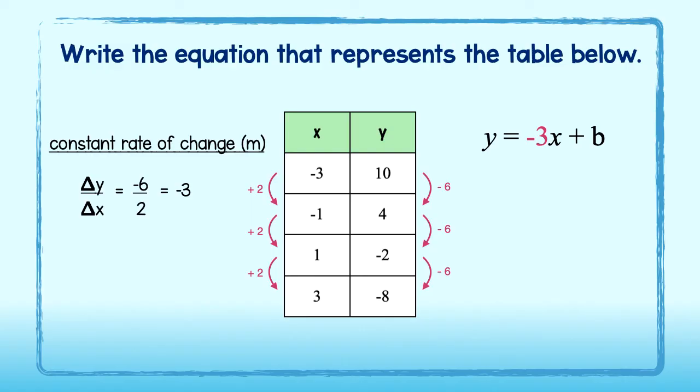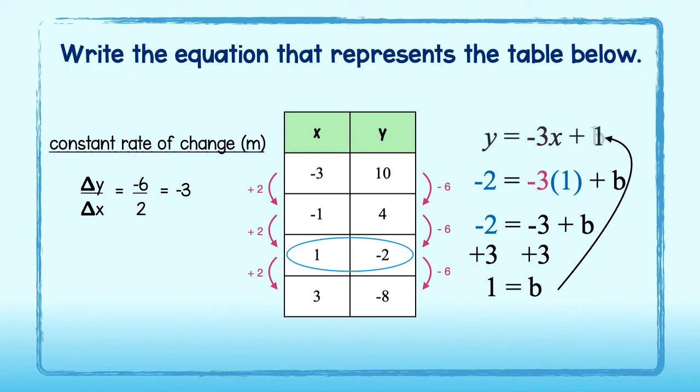To find the y-intercept, I will choose any value from my table, say 1, negative 2, and insert these values in for x and y. Lastly, we will solve for b. Negative 3 times 1 is negative 3. Add 3 to both sides to see that b is equal to 1. The equation that represents this table is y equal to negative 3x plus 1. Good!